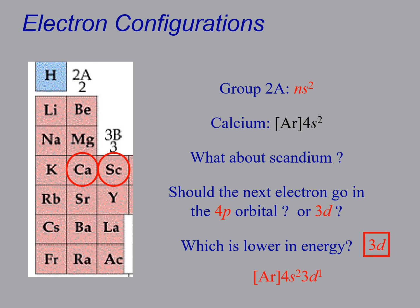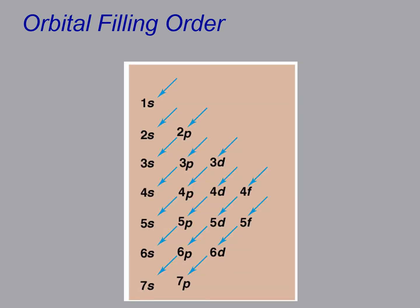So here's another way to easily remember this, that you write all the values of n and then possible values of l each on its own line. And you only have to go up to f. And then you fill them on the diagonal. So you fill up 1s, 2s, 2p, 3s, 3p, 4s, 4d, 4p, 5s, 4d, and so on and so forth. And this will actually, by dumb luck, tell you what the right energy order is.